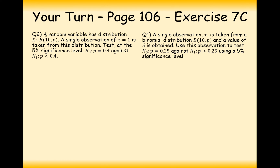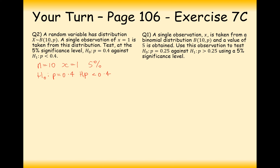Well done for having a go. The first practice question: X ~ B(10, P), and the observation is only one success. Test at 5% significance level where H0: P = 0.4 and H1: P < 0.4. In context: a player takes 10 penalties with a usual 40% success rate but only scores one. The question is whether something has changed to lower their probability of scoring.